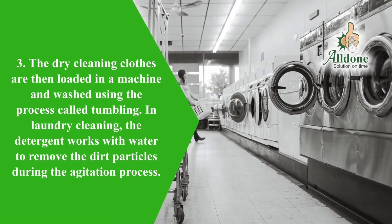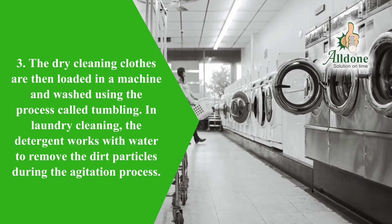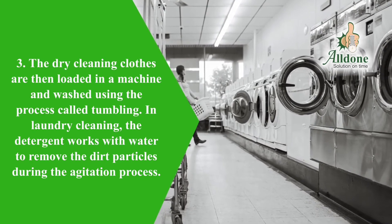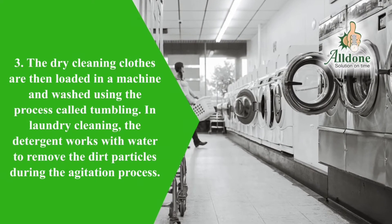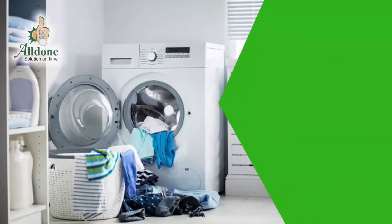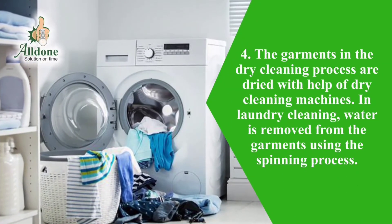Dry cleaning clothes are loaded in a machine and washed using the process called tumbling. In laundry cleaning, the detergent works with water to remove the dirt particles during the agitation process.